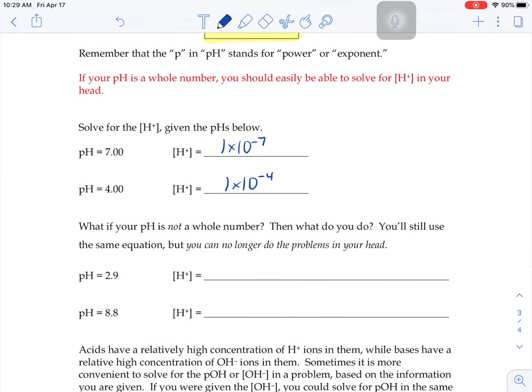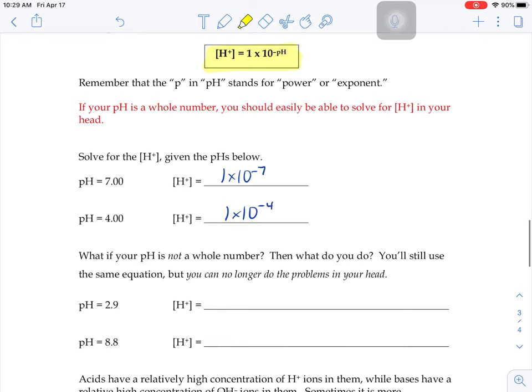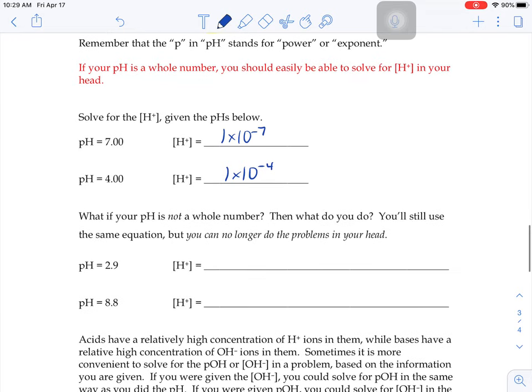What if your pH is not a whole number though? What do you do? We're still going to use the same equation, but you just can't do the problems in your head anymore. So we're still going to do 1 times 10 to the negative pH. So 1 times 10 to the negative 2.9. The problem is when we write numbers, we typically don't have decimals as exponents.